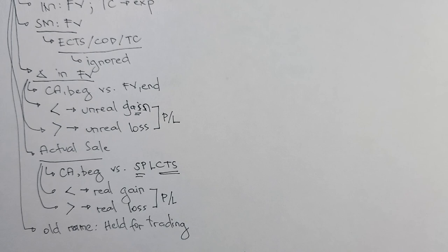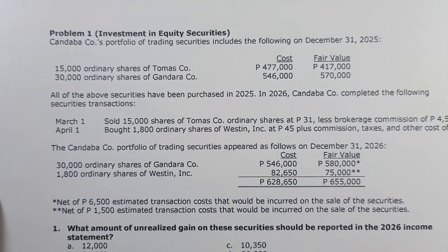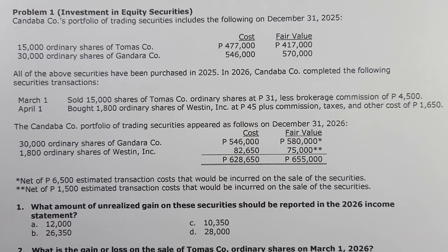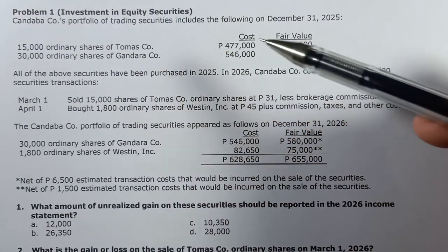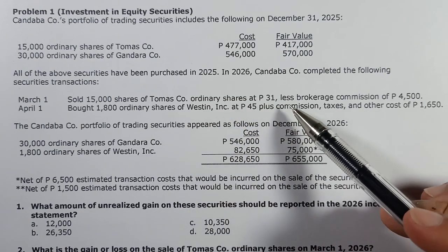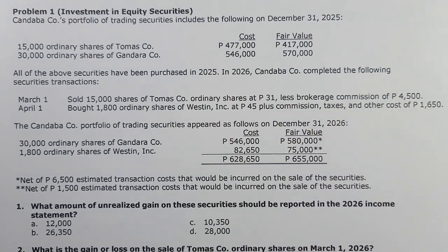So to apply all these concepts, let's move on to illustrative problem number one. Candaba Company's portfolio of trading securities includes the following on December 31, 2025: 15,000 ordinary shares of Thomas Company and 30,000 ordinary shares of Gandara Company. All of the above securities have been purchased in 2025. Then in 2026, Candaba Company completed the following securities transactions. On March 1, we sold 15,000 shares of Thomas Company ordinary shares at 31 less brokerage fee of 4,500. Kapag binibenta mo na securities, minaminus siya — pero pag hindi pa, ini-ignore lang.